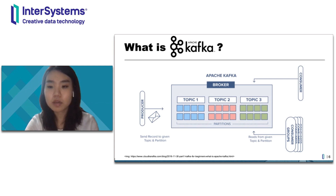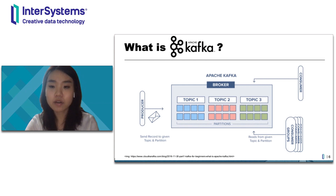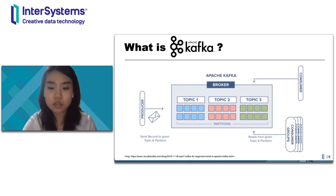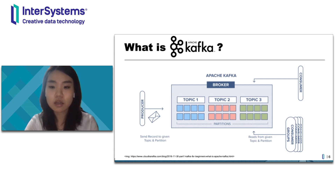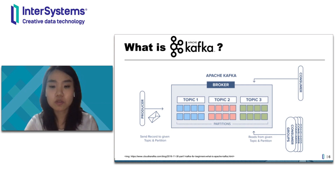The two main parts in the Kafka system are the producers and the consumers. Here on the left, the producers are processes that push records into the Kafka topics within the broker. In contrast, a consumer pulls records off a Kafka topic. A consumer can be reading data from one or more topics, or multiple consumers can be reading from a single topic. As topics can get quite big, they get split into partitions of a smaller size for better performance and scalability. So to summarize, when an event happens, a producer sends a record to a given topic, which is then split into partitions, and this is read by either a single or multiple consumers in real time.